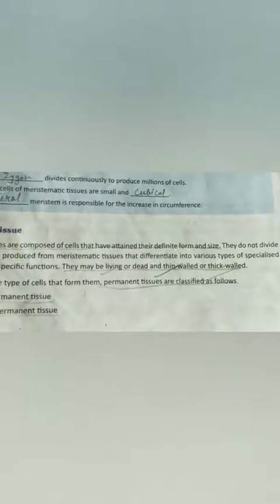Good morning students. Today we will discuss about permanent tissues. These tissues are made up of cells which are definite in form and size. They have already matured and since they perform specialized functions, they are differentiated cells. These cells have certain characteristics. Permanent tissue is derived from the division of meristematic cells.